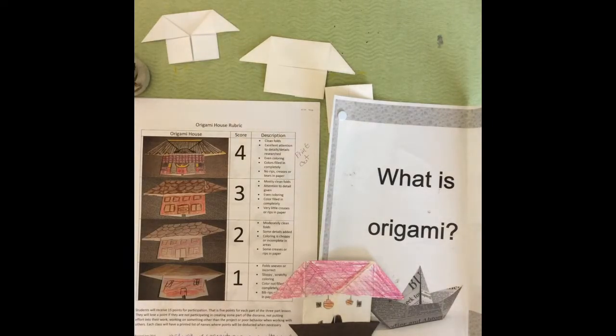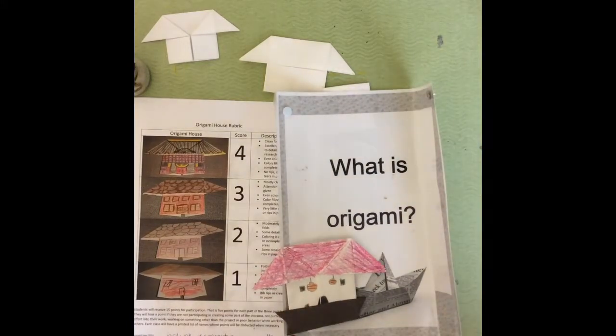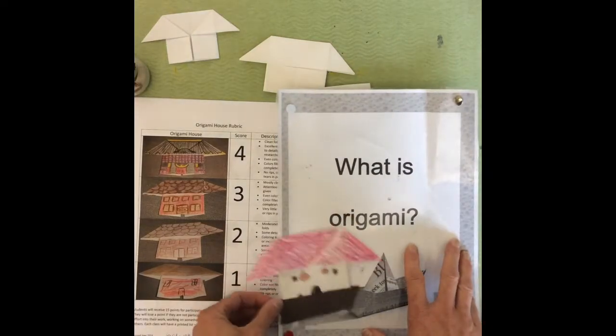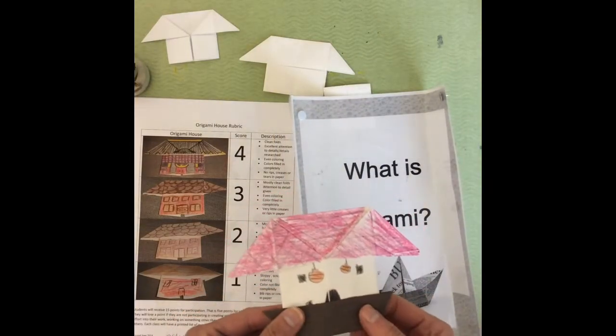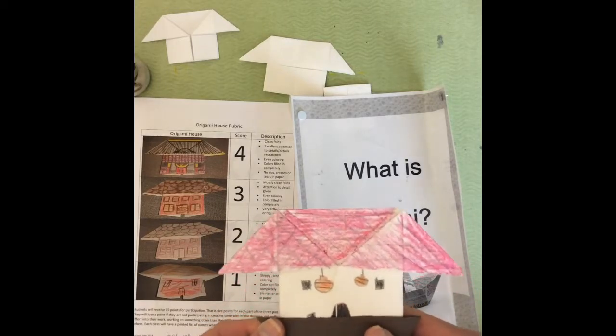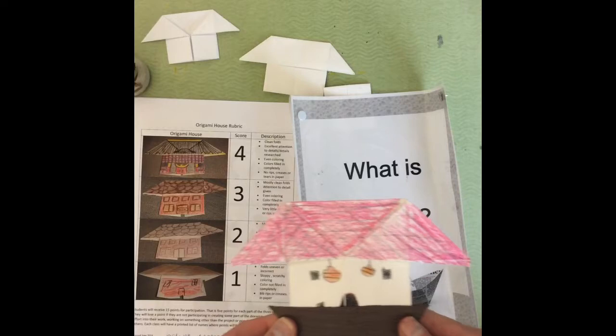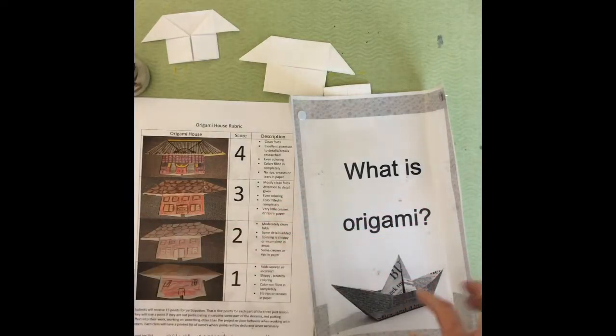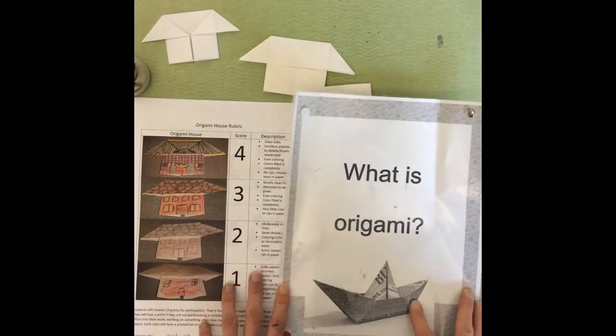So the first thing we want to know is what is origami and what are the elements of art? Origami is the ancient art of folding paper. There are lots of different kinds of origami, rated from easy all the way up to very advanced. Most origami starts with a square.